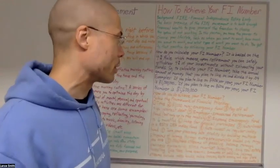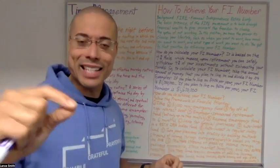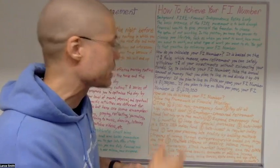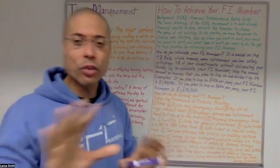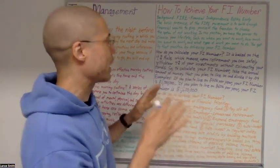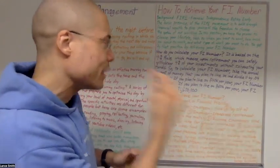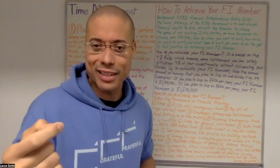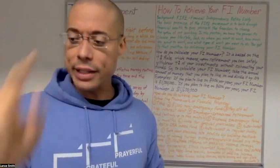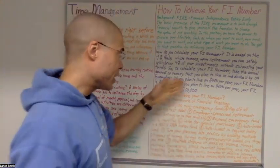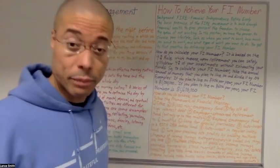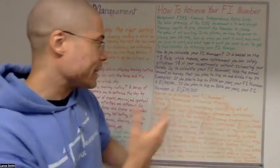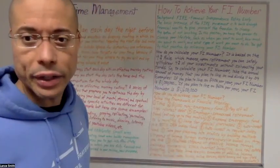How do you calculate your FI number? It is based on the 4% rule, which means upon retirement, you can safely withdraw 4% of your investments without exhausting your funds. It's a general rule of thumb. To calculate your FI number, take the annual amount of money that you plan to live on and divide it by 0.04. For example, if you plan to live on $40,000 per year in retirement, then your FI number is $1 million, because 40,000 divided by 0.04 equals 1 million.